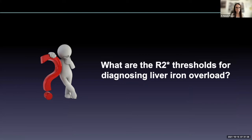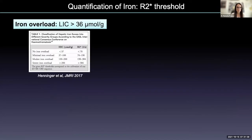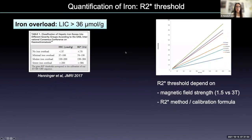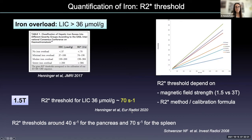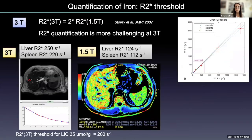What are the R2* thresholds for diagnosing liver iron overload? Classically, when quantification was done with liver biopsies, the liver iron concentration threshold was 36 micromoles per gram. The R2* thresholds corresponding to this liver iron concentration depend on the magnetic field strength, the R2* method, and the calibration formula chosen. Generally speaking, we can consider these as the thresholds for hepatic iron overload at 1.5 Tesla, along with thresholds for pancreas and spleen iron deposition.